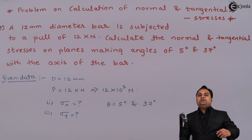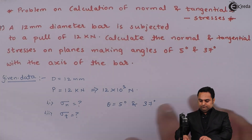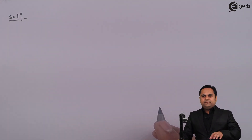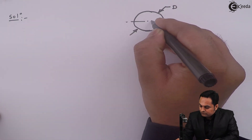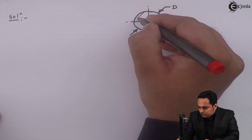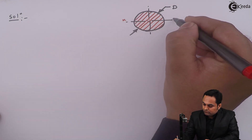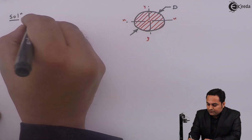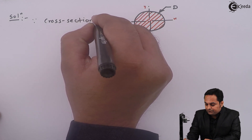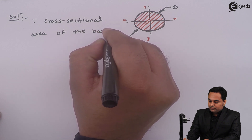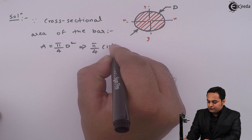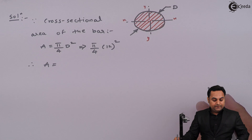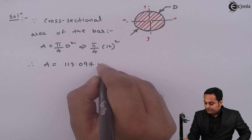With the data available, let us try to get the solution to this problem. Since the diameter of the bar is given, we can first get the cross-sectional area, which will be circular. The cross-sectional area A = π/4 × d² = π/4 × 12² = 113.097 mm².